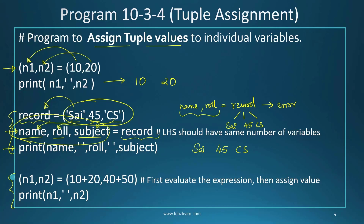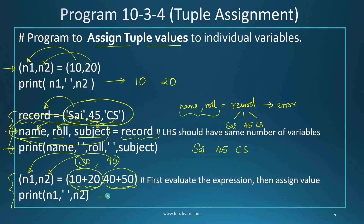You can also provide expressions inside a tuple assignment. The mathematical expression is evaluated first, then the results are loaded into the corresponding variables on the left side. Here, n1 and n2 are assigned 10+20 and 40+50 — first 10+20 evaluates to 30, then 40+50 evaluates to 90, so n1 gets 30 and n2 gets 90.